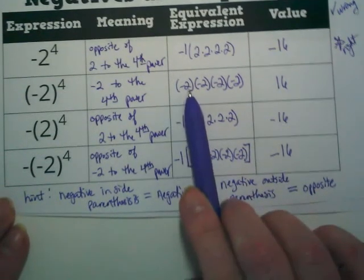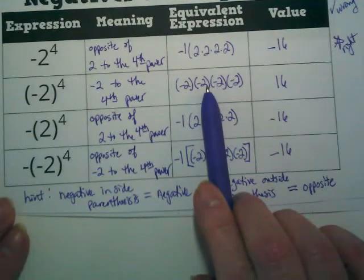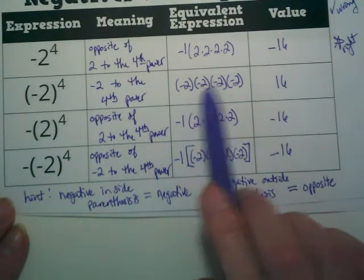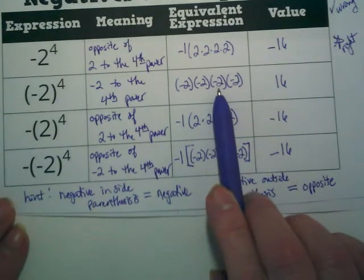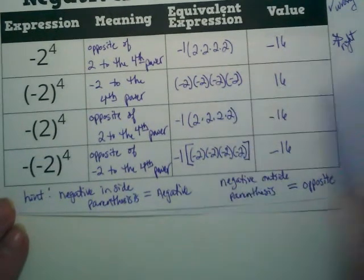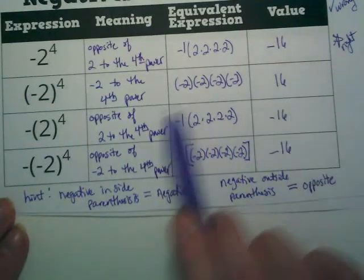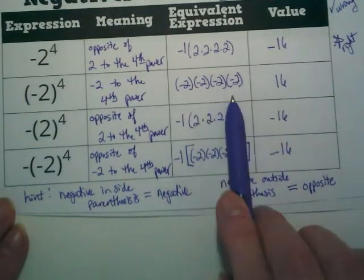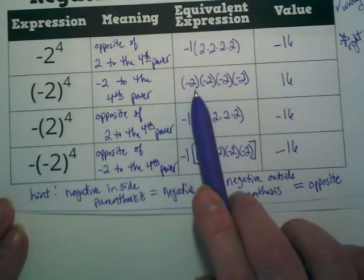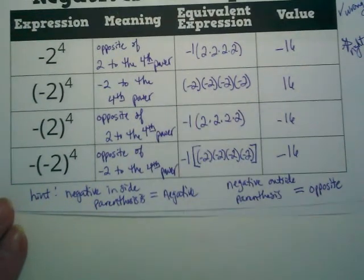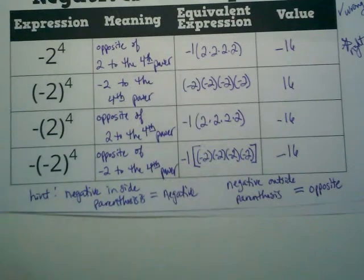Remember, when we multiplied this, we did negative 2 times negative 2 and got positive 4. Then we did positive 4 times negative 2, and we got negative 8. And then negative 8 times negative 2 got us to the positive 16. We didn't ignore these negatives. We used them. If they were in there, they were part of that number, and that's a negative 2. If it's outside, it's opposite.